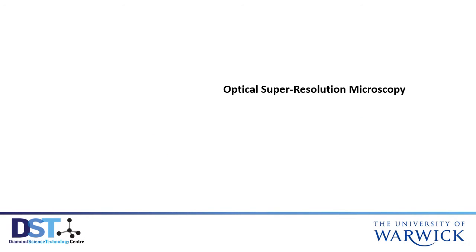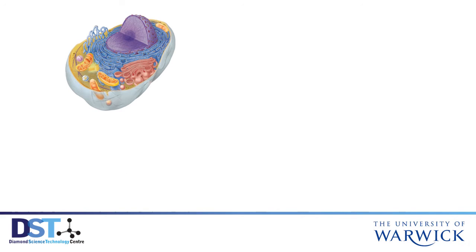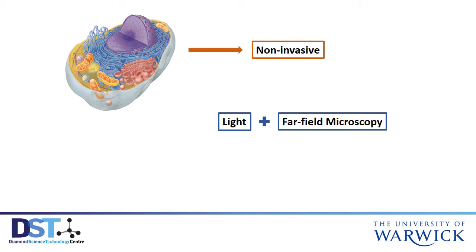The following content in this podcast will be based on a lecture of the same name given at the University of Warwick by Professor Christian Egeling. So, we want to image live cells, which means the method has to be non-invasive, because we do not want to affect the behaviour of the cells, or even worse, kill the cells. By combining light and far-field microscopy, we get a non-invasive technique.